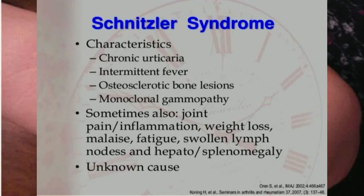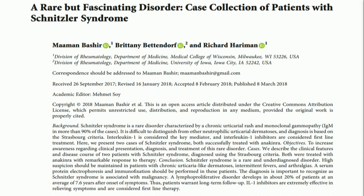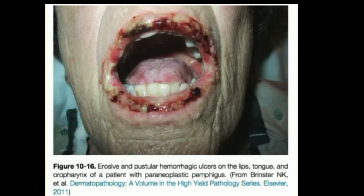Schnitzler's syndrome presents as urticarial-type plaques with central clearing — a neutrophilic urticaria — usually associated with intermittent fevers and sometimes osteosclerotic bone lesions. Patients present with urticaria but feel generally unwell. Anakinra is quite helpful in managing this, in addition to antihistamines, systemic corticosteroids, and anti-neutrophil agents like colchicine and dapsone. It is a fairly uncommon chronic urticaria, with a recent publication highlighting a number of cases.